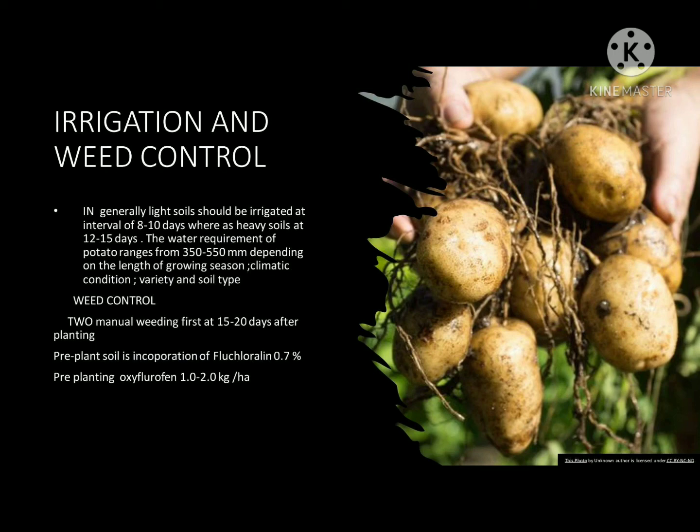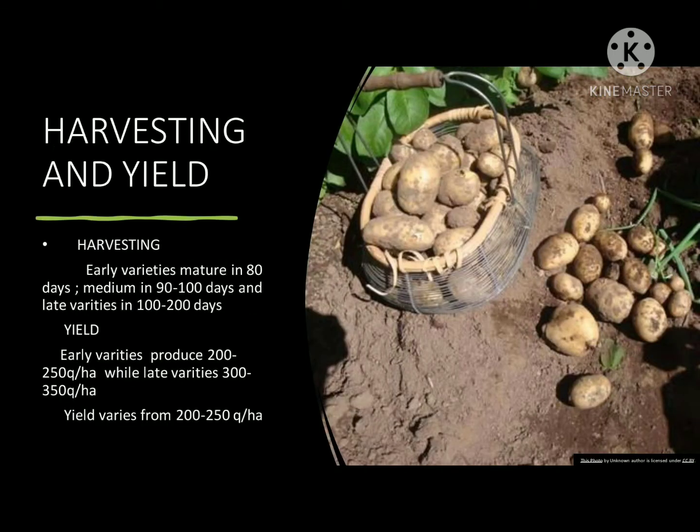Harvesting: early varieties mature in 80 days, medium varieties in 90 to 100 days, and late varieties in 100 to 120 days. Yield: early varieties produce 250 quintals per hectare, while late varieties yield 300 to 350 quintals per hectare.